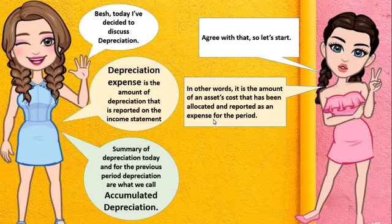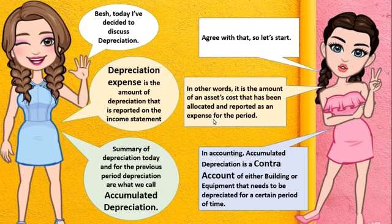In accounting, Accumulated Depreciation is a contra-account of either building or equipment that needs to be depreciated for a certain period of time.